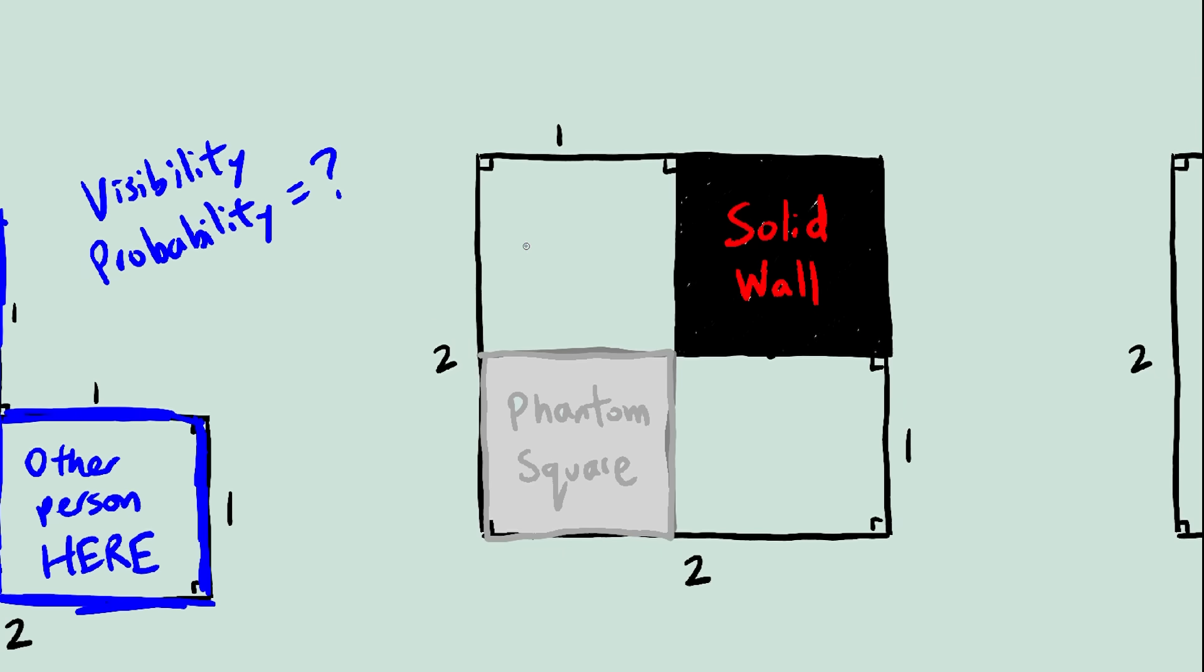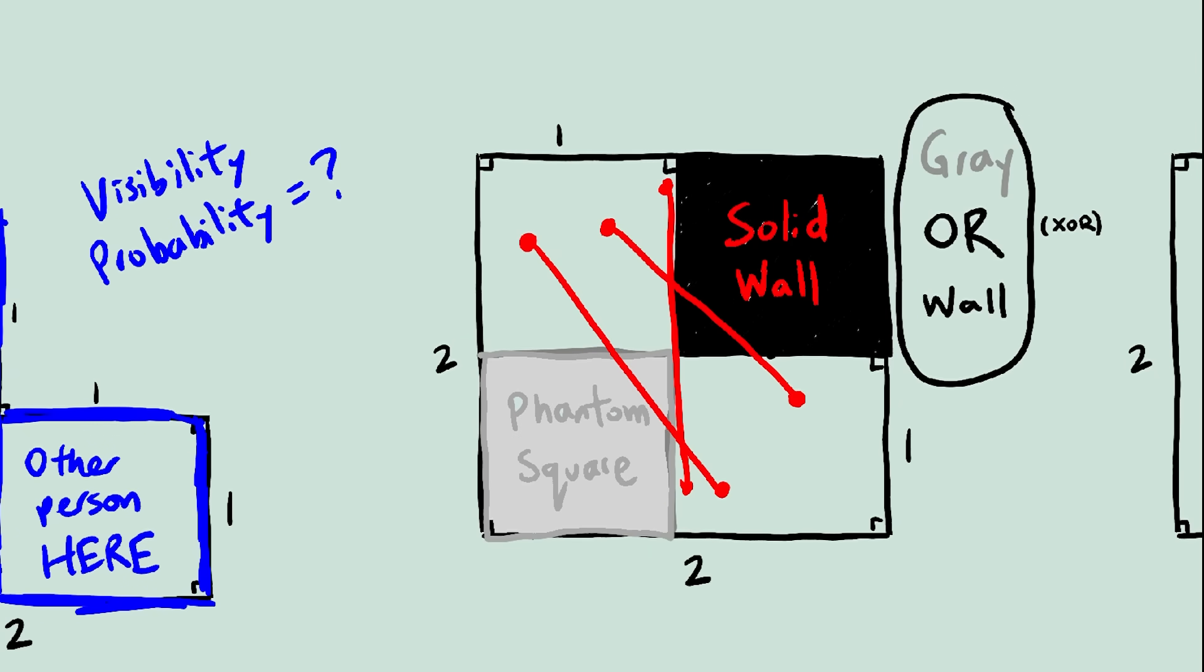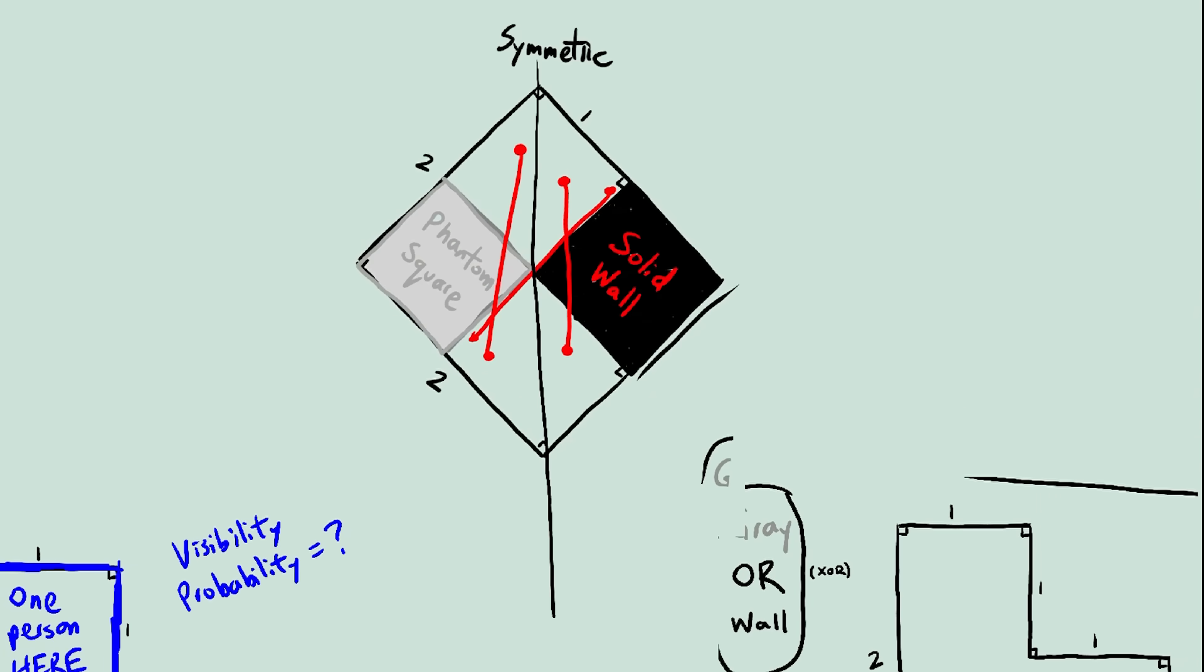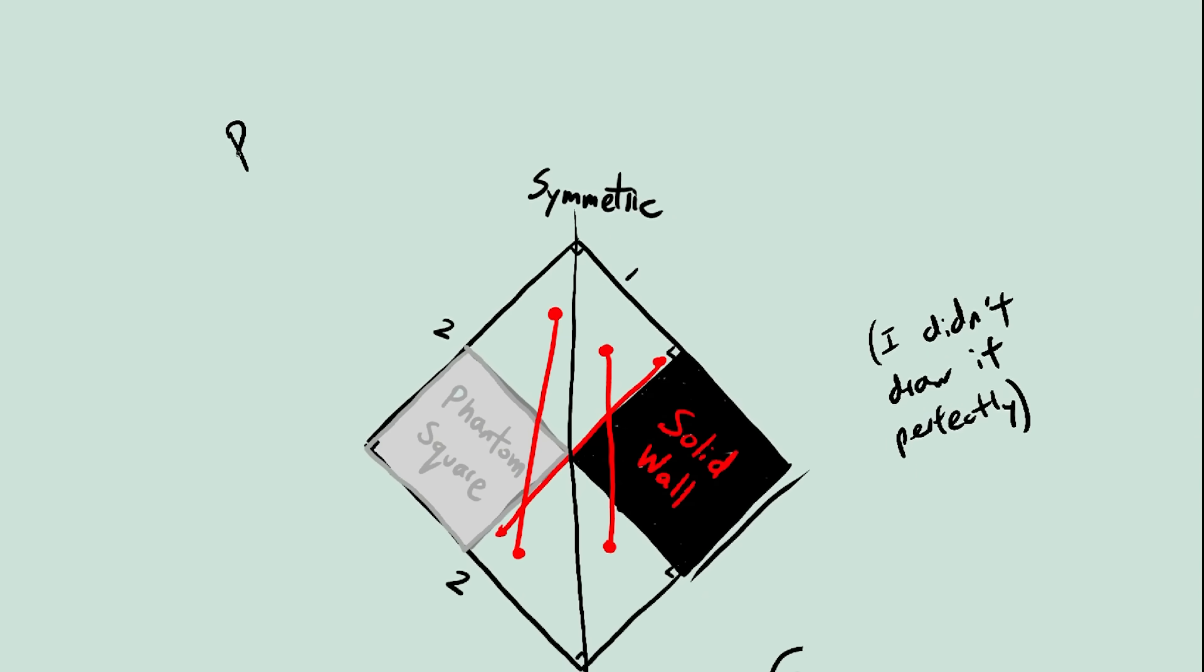And you might notice that the line segment must go through either the gray square or the wall square. It can't go through both, it's always one or the other. And you'll also notice that these two squares are symmetric to one another. This is easier to see if you rotate the diagram. And symmetry means the probability is also symmetric, they're the same.